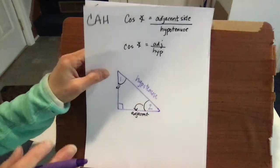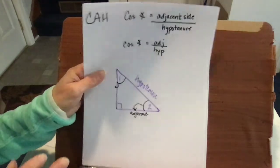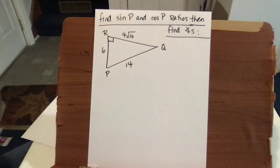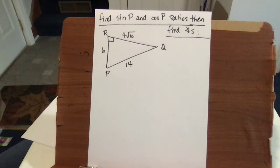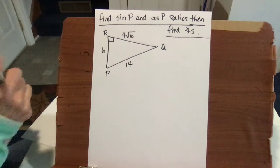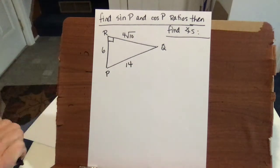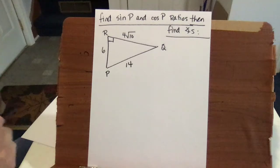Since we already did tangent, today's lesson is focusing solely on sine and cosine. We want to find the sine of angle P and the cosine of angle P ratios, and then find the angle measures.